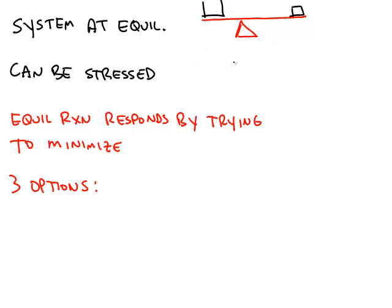Level seesaw is our equilibrium situation. When we stress it, that's, for example, putting extra weight on one side or the other. If I add weight to the right-hand side of the seesaw, now my seesaw looks like this, and it's going to try to reach a new equilibrium. The only way that this can reach a new equilibrium is if some of the weight that we added to the right gets shifted over to the left.